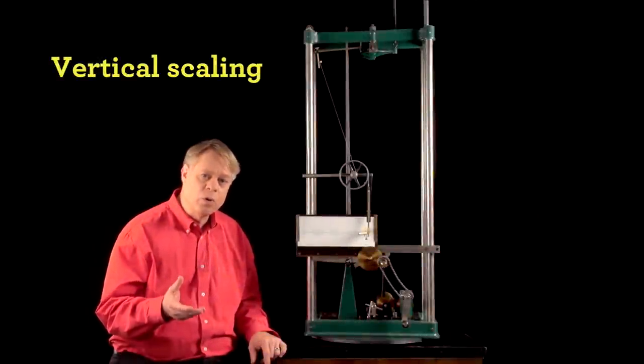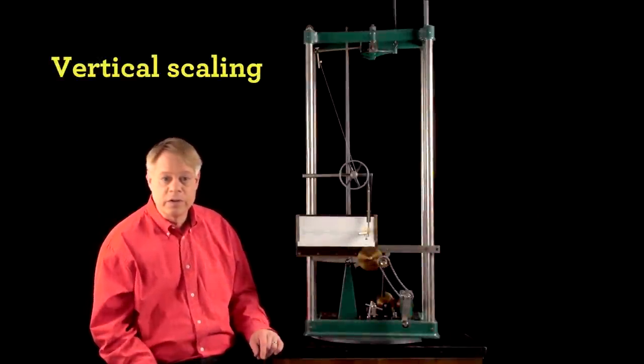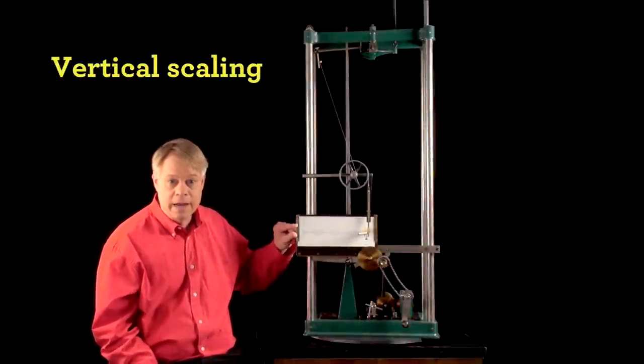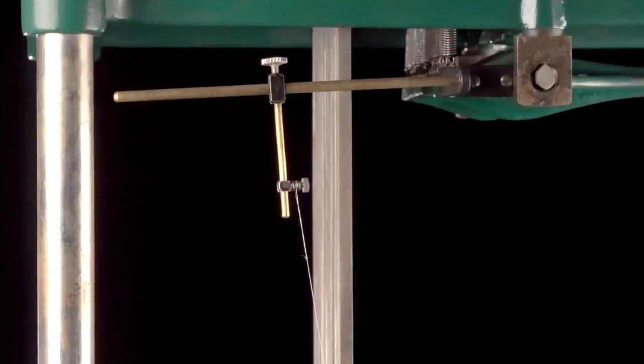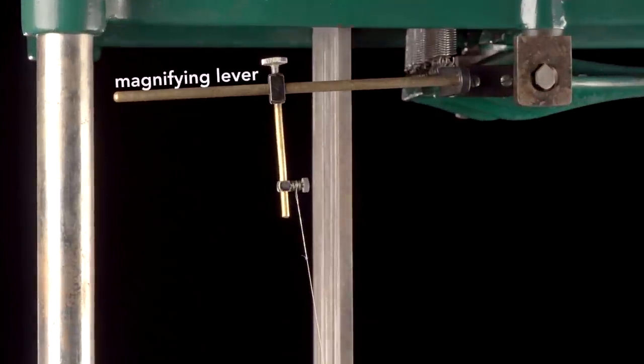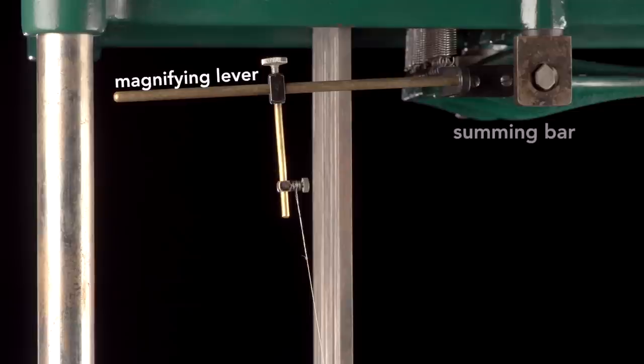In contrast to the horizontal scaling, the analyzer uses a different method to scale up and down. At the top of the analyzer, the vertical scaling is determined by the magnifying lever. This cylindrical rod extends from the pivoted summing bar. The position of this knob on the lever determines the vertical scaling of the output.